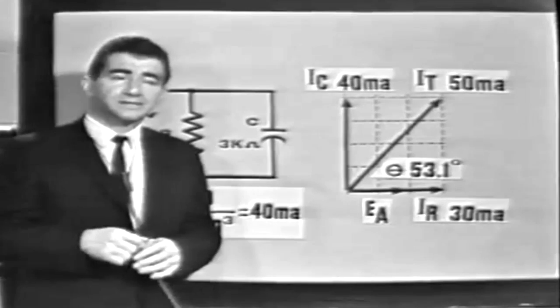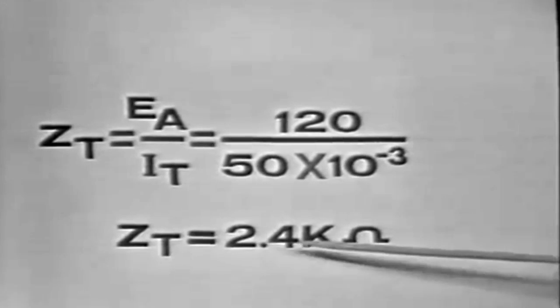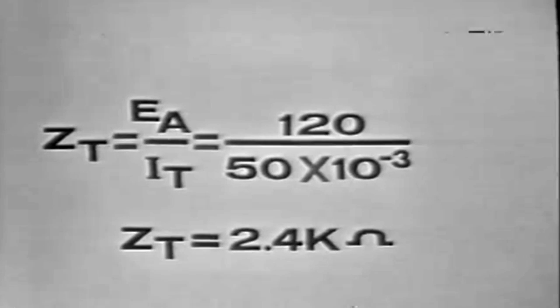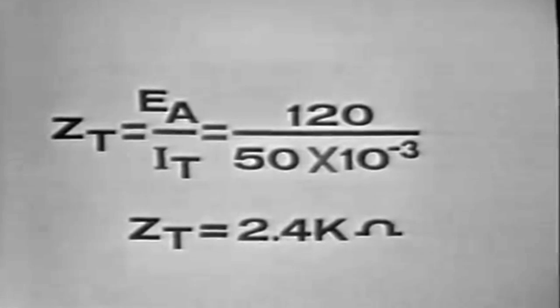Applying Ohm's law, ZT equals EA over IT, or 120 volts over 50 milliamps, giving a total impedance of 2.4K ohms. As in all parallel circuits, the total impedance is less than the smallest impedance in the circuit. The graphical solution is not very accurate and would become difficult in a more complex circuit, so the next portion of this lesson will present a much more accurate and easier way to calculate the unknown factors.